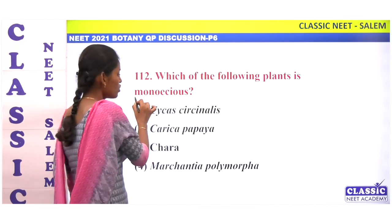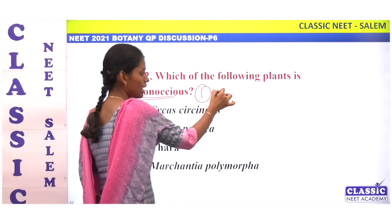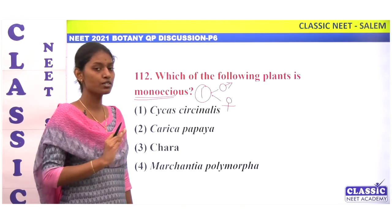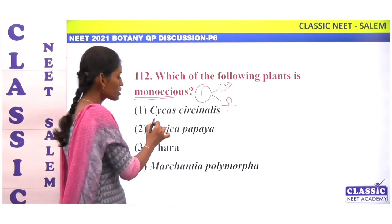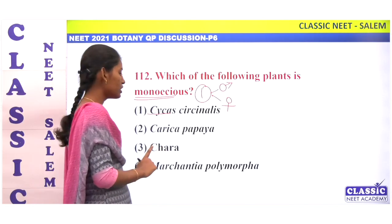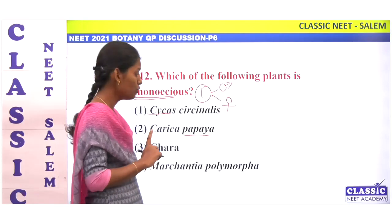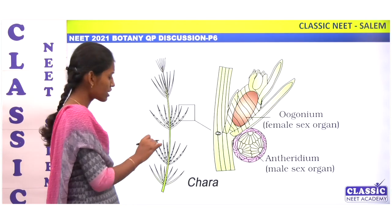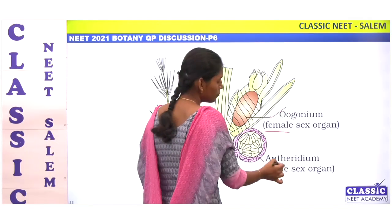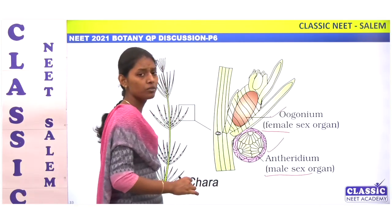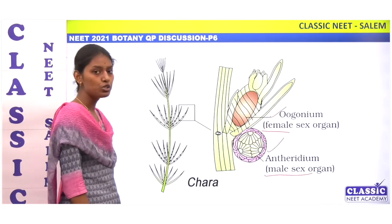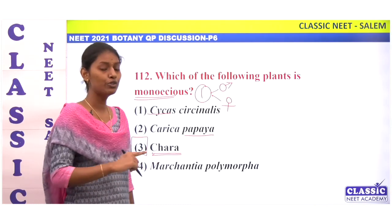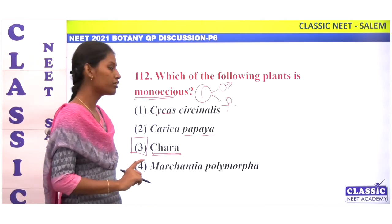Which of the following is monoecious? Monoecious means one plant has both male and female structures. If male and female sex organs are present in the same plant, it is monoecious; in separate plants, it is dioecious. Marchantia is dioecious — male thallus has male sex organ, female thallus has female sex organ. Chara is monoecious. Option 3.